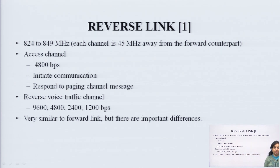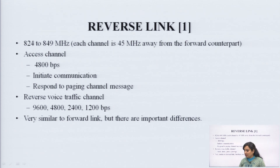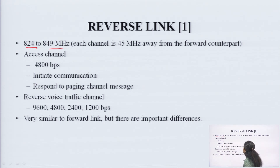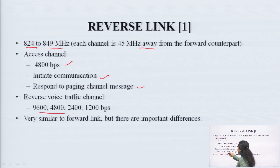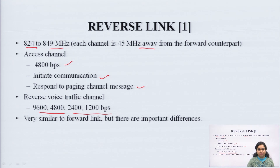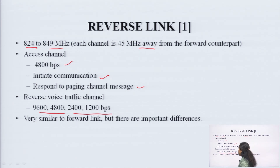The reverse channel has a bandwidth range from 824 MHz to 849 MHz — each channel is 45 MHz away from its forward counterpart. The access channel is 4800 bps, used to initiate communication and respond to paging channel messages. Reverse voice traffic can be 9600, 4800, 2400, or 1200 bps. It is very similar to the forward link but with some important differences.